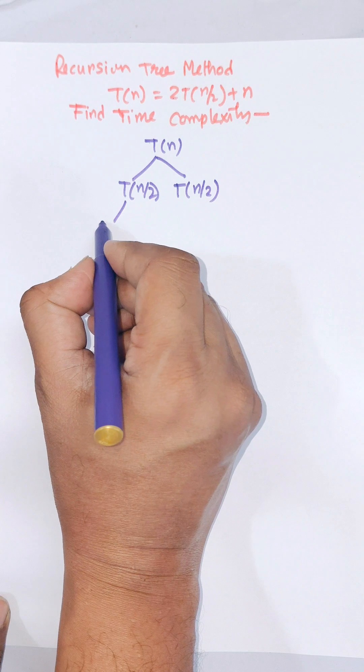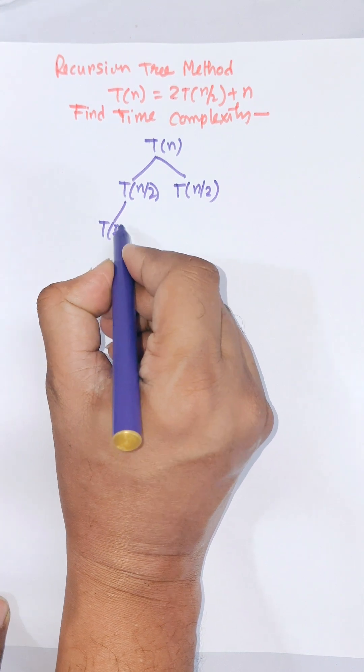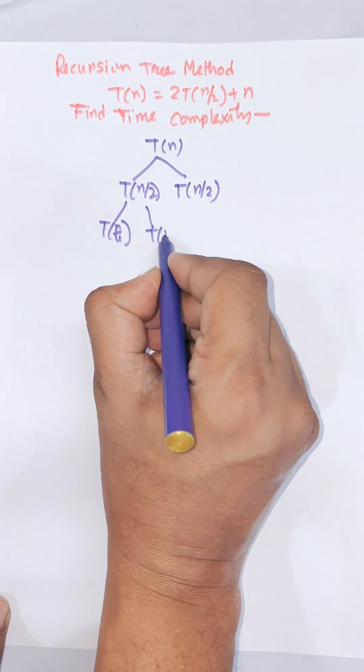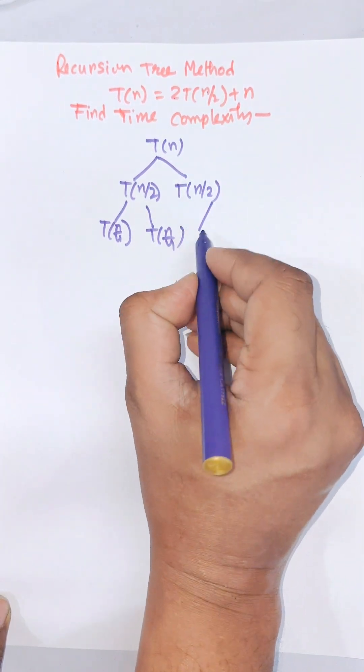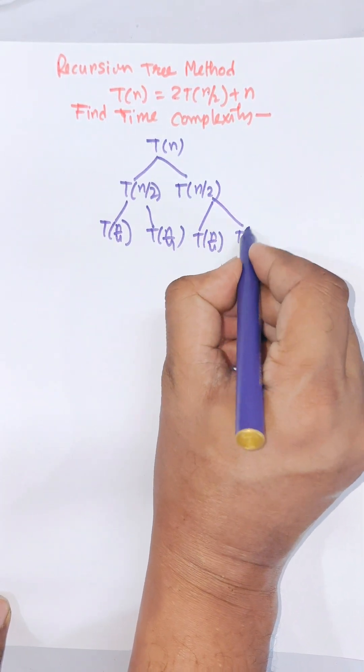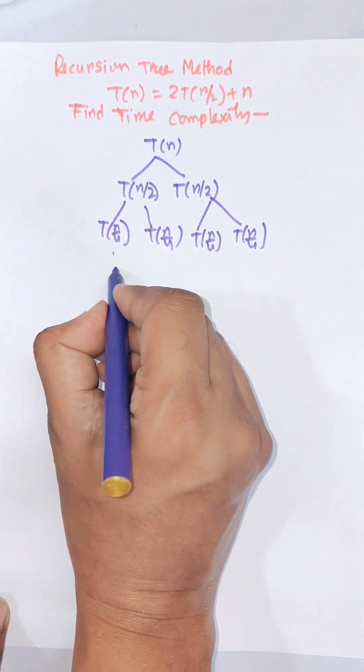Then when we put T(n/2) we get T(n/4) and T(n/4). Putting the value of n/2, n/2 by 2 means n/4. Then it is again n/4 and T(n/4) and so on.